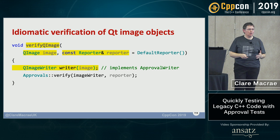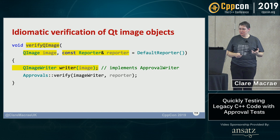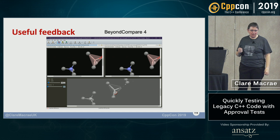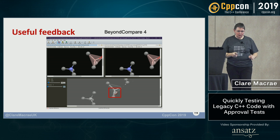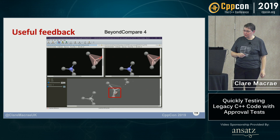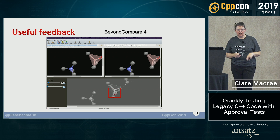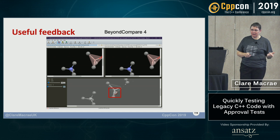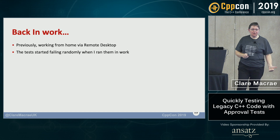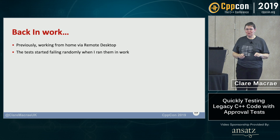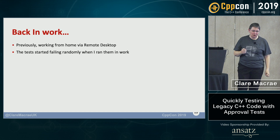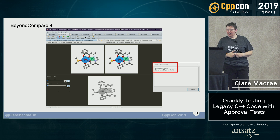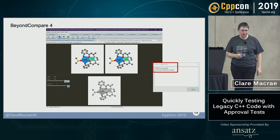In the differencing tool, top-left is my received image, top-right is the last approved one, and at the bottom Beyond Compare shows the difference — inside the red square you can see a few red dots, pixels that are slightly different. I had speeded up my tests by reusing some widgets and to my surprise didn't get identical images. That told me something about the underlying code I didn't know about, which was really valuable.